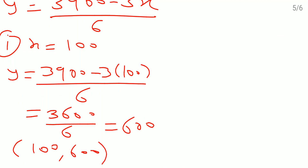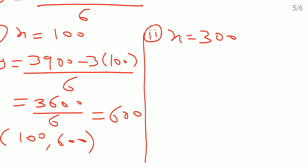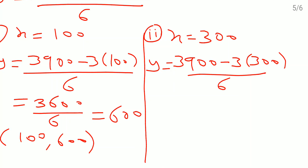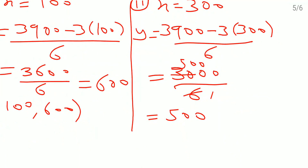For the second solution, x = 300, so y = (3900 − 3 × 300) / 6 = (3900 − 900) / 6 = 3000 / 6 = 500. I got the second solution, which is (300, 500).